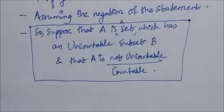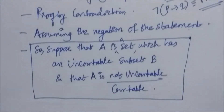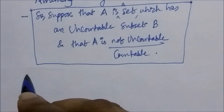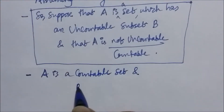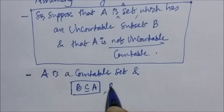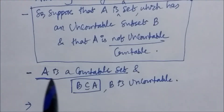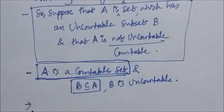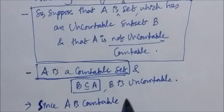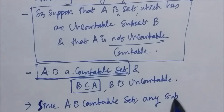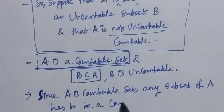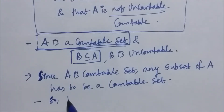After our assumption we know these things: A is a countable set, B is a subset of A, and B is an uncountable set. Now since A is a countable set, we know that any subset of A is a countable set, because any subset of a countable set is countable.